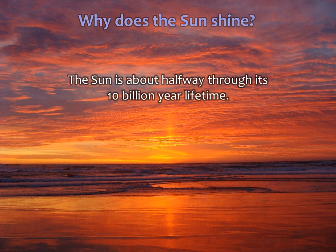The sun was born with enough hydrogen in its core to maintain this equilibrium for about 10 billion years, so it is only about halfway through its lifetime. About 5 billion years from now, when the sun finally uses up its nuclear fuel, gravitational contraction will take over and some very interesting things will happen — we'll talk about the death of the sun later in the semester.